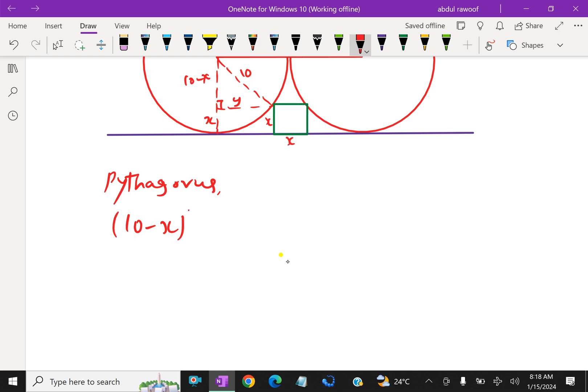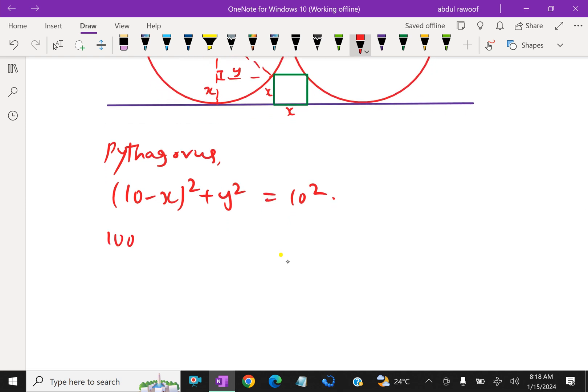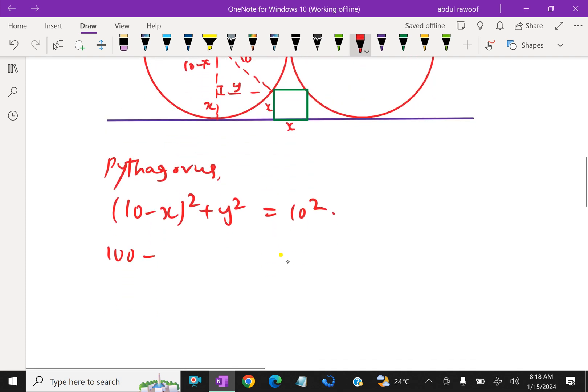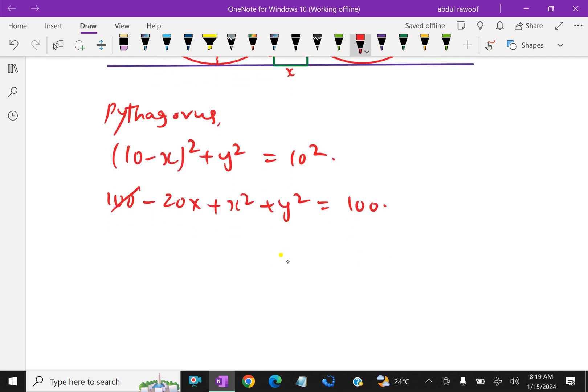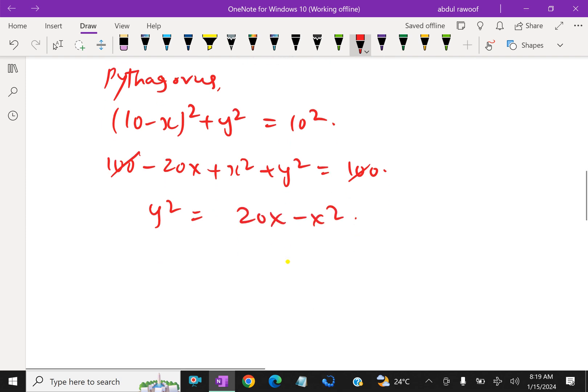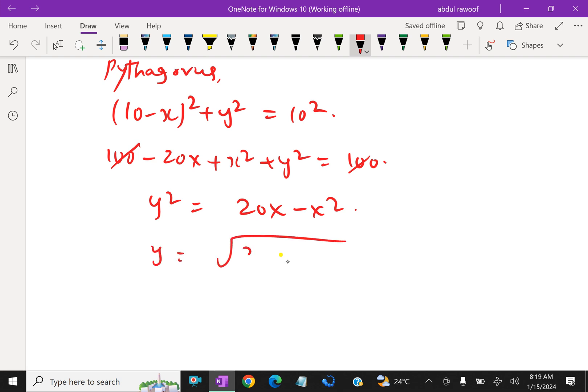10 minus x squared plus y squared equals 10 squared. That is expanding: 100 minus 20x plus x squared plus y squared equals 100. The 100s cancel. So we have y squared equals 20x minus x squared. Let it be equation 1.